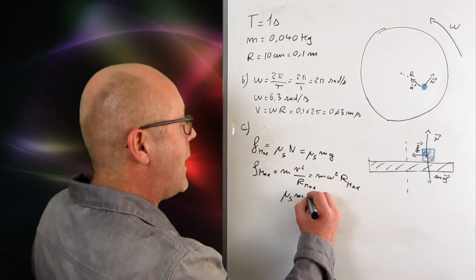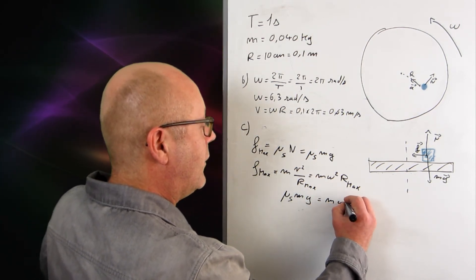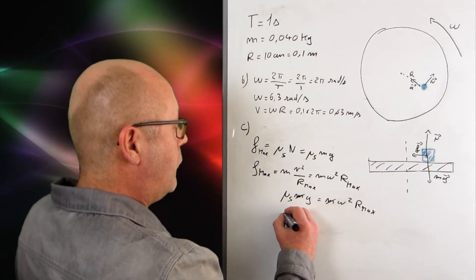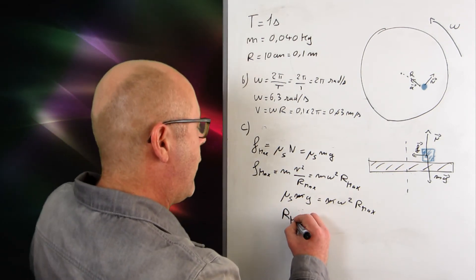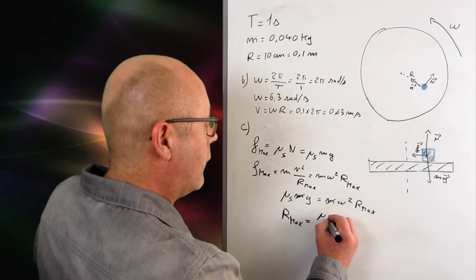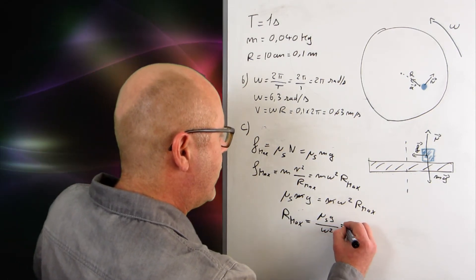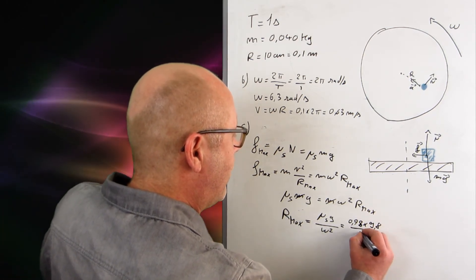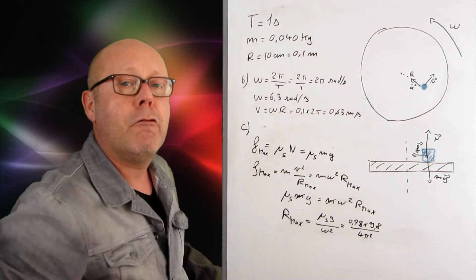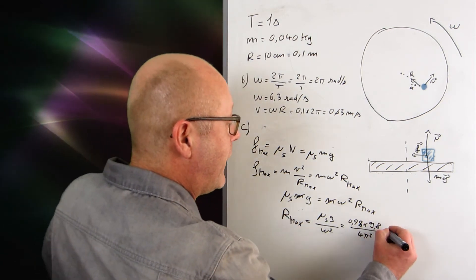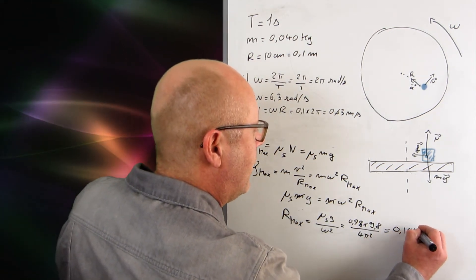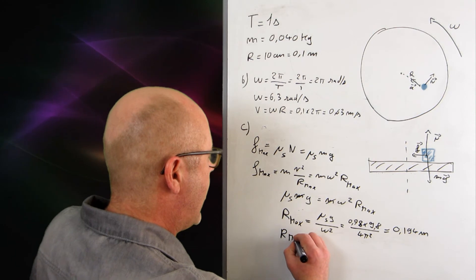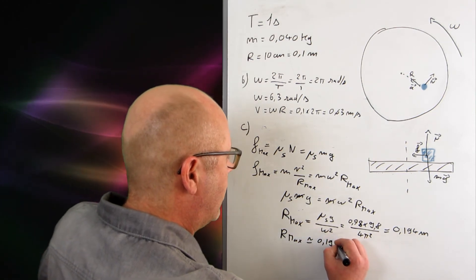Canceling the masses and solving for r_max: r_max = μ_s·g / ω². Plugging in the numbers: μ_s = 0.78, g = 9.8, ω = 2π rad/s so ω² = 4π². This gives r_max = (0.78 × 9.8) / (4π²) ≈ 0.194 m. With two significant figures, r_max ≈ 19 cm.